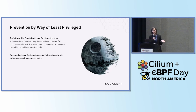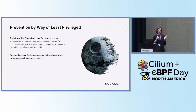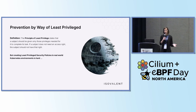So what is actually the principle of least-privileged? By definition, it states that a subject should be given only those privileges needed for it to complete its task. And if a subject doesn't need an access right, the subject should not have that right. For example, if you have a Kafka application in a Kubernetes environment, you know it should only run Java, it should never shell out to the node, it should never make any unexpected network connection, and it should never have capabilities like CAP_SYS_ADMIN.